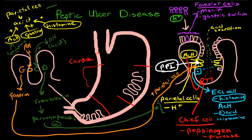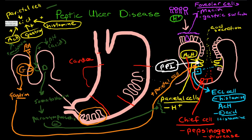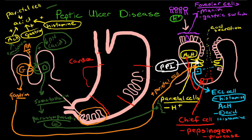The regulation of acid production really occurs in the antrum of the stomach because of the G cells — which are stimulated by protein to produce gastrin, which stimulates the parietal cells — and the delta cells, which provide a negative feedback for high acid levels by producing somatostatin, which suppresses the parasympathetic nervous system to decrease acid production.